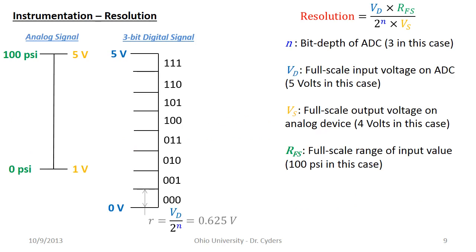What happens if the analog device's voltage range differs from the ADC's input range? Visually, we're not using some of the bits — we're not reading the full capability of our ADC to resolve the signal. Where before we were reading 0 to 100 psi over the entire 8-bin range, now we might only be dividing that range over 6 bins, reducing our resolution.